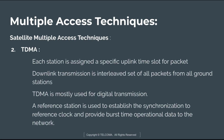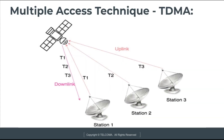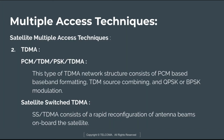This diagram shows three ground stations accessing a single frequency translation satellite transponder using TDMA. Each station is assigned a specific time slot — T1, T2, and T3 — for its uplink transmission of bursts of data. Each ground station has exclusive use of the full transponder bandwidth during its time slot. Time slots can be pre-assigned or changed on demand, and guard times are used between time slots to avoid interference. On the downlink, the three time slots are transmitted together on the downlink carrier.